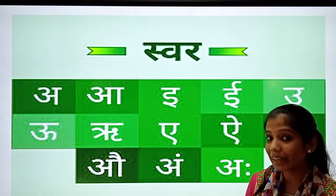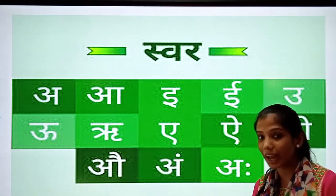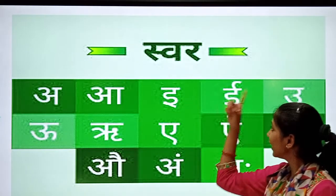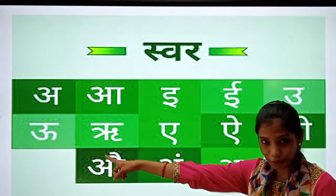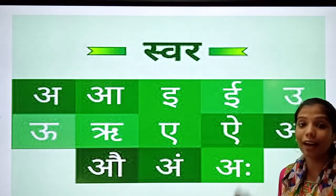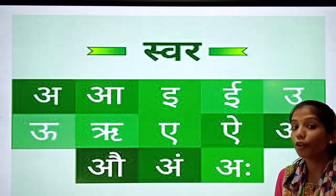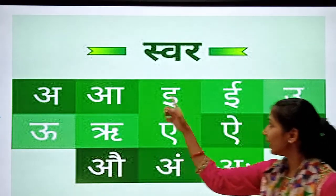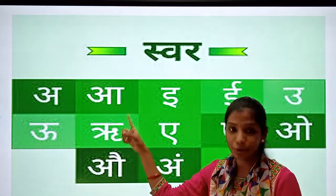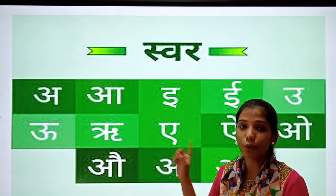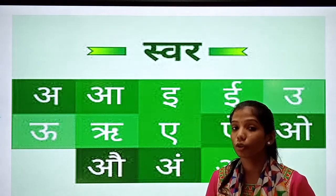Okay students, but before starting that swar, we will do a rhyme. A, E, E, U, U, R, U, A, I, O, O, N, K, A, H. You have to repeat after me — A, E, E, U, U, R, U, A, I, O, O, A, N, K, A, H.